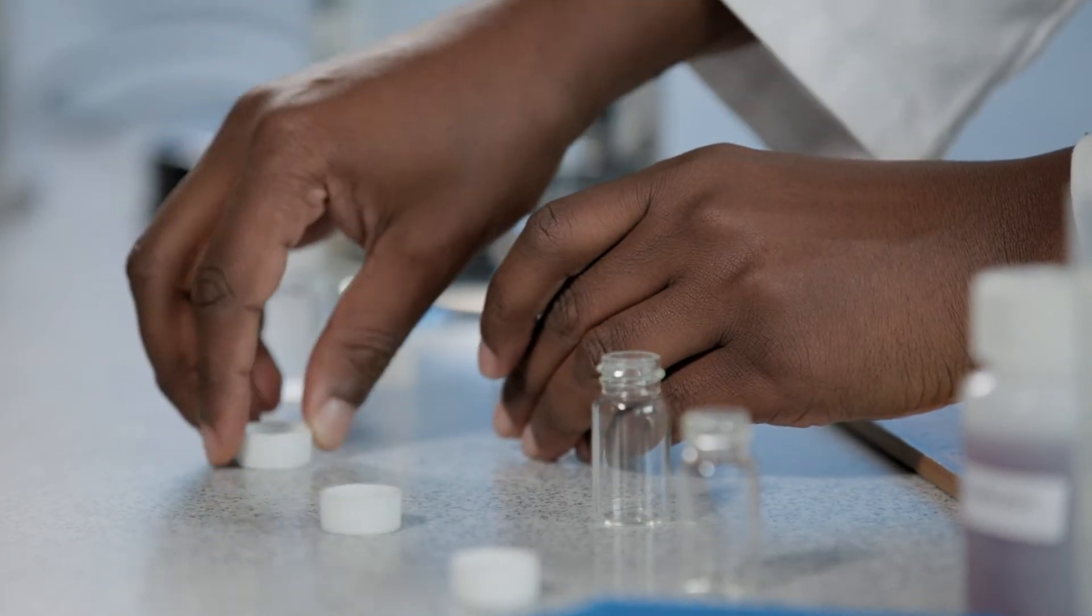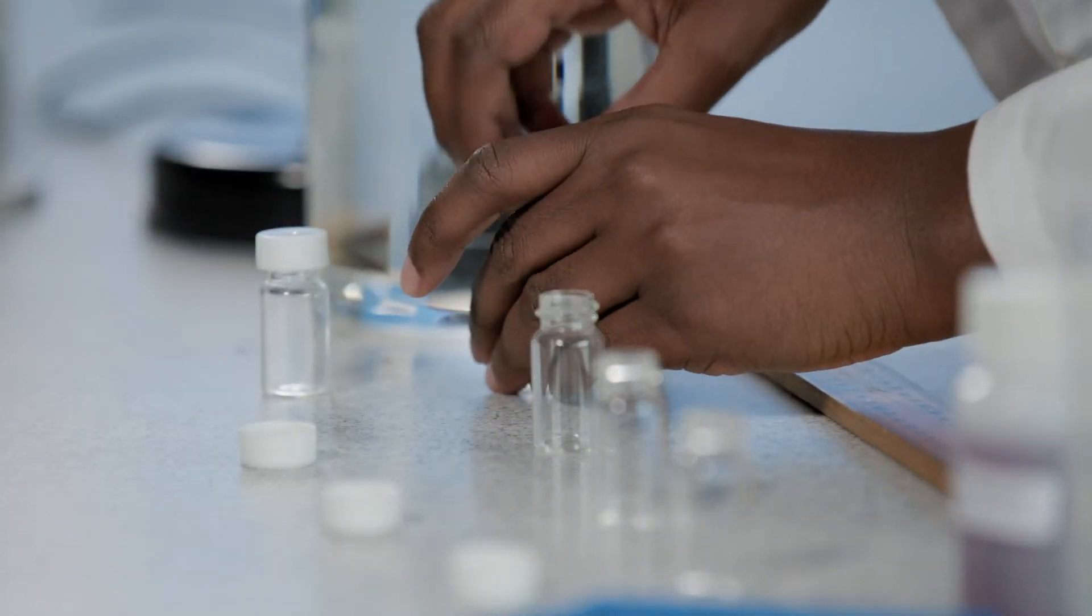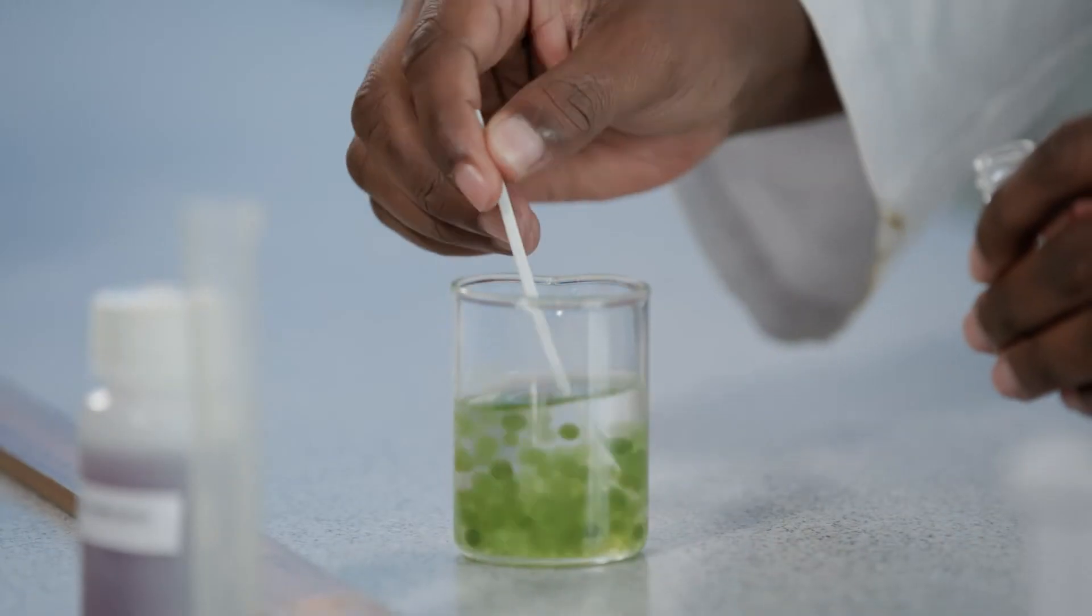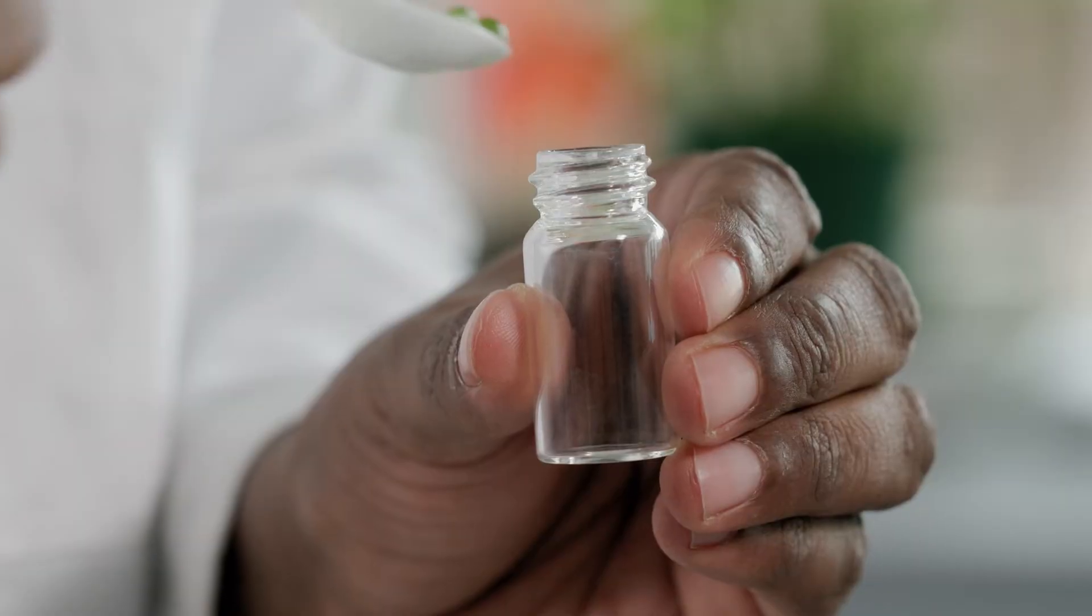Place your bottles at measured distances from the lamp. Remove the bottle caps. First, add 10 to 15 algae balls to each bottle.